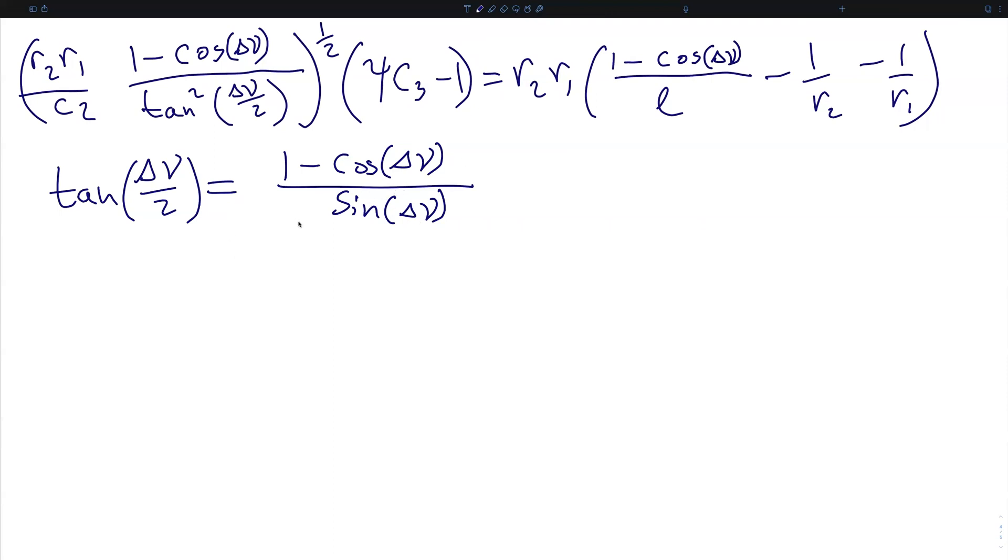So we can replace this term 1 minus cosine delta nu tan squared delta nu over 2 with sine squared delta nu over 1 minus cosine delta nu.